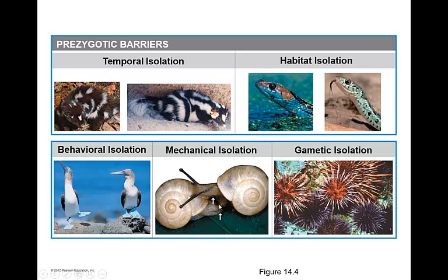Mechanical isolation is when the parts don't fit together — they may try to mate with one another but simply physically cannot. And then gametic isolation is where the gametes simply are not going to be compatible with one another, so they're not going to be able to mate.